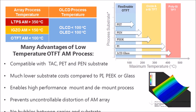OTFT can be processed at very low temperatures, which brings two primary advantages. The first is in material selection. Higher temperature approaches like LTPS and Oxide require the use of highly engineered substrates like polyimide. Alternatively, OTFT arrays can be processed on low-cost materials like TAC, PT, and PEN, which are much more ubiquitous in their uses.